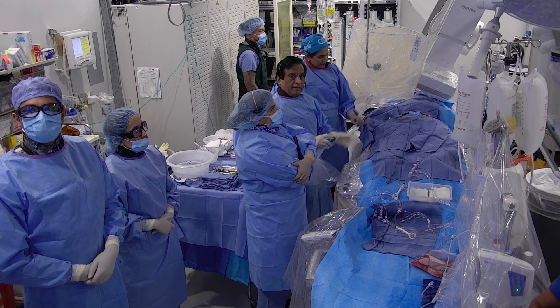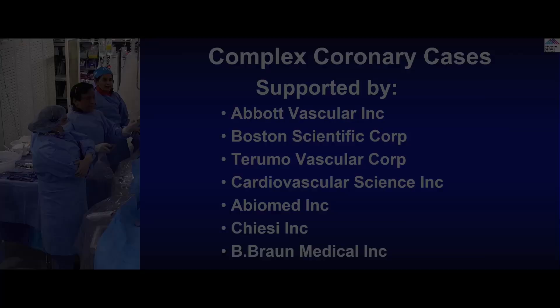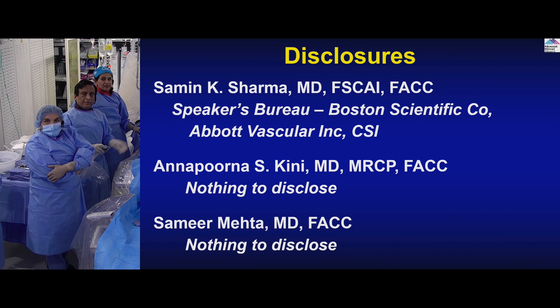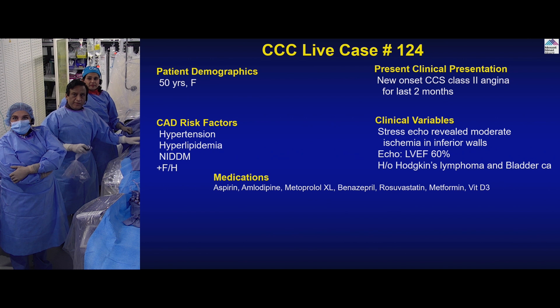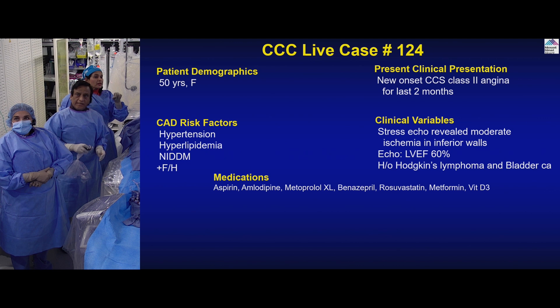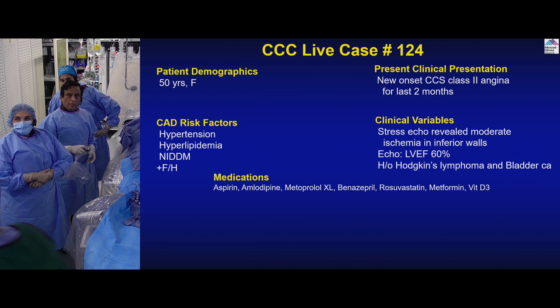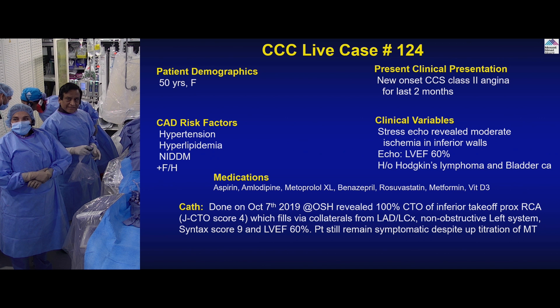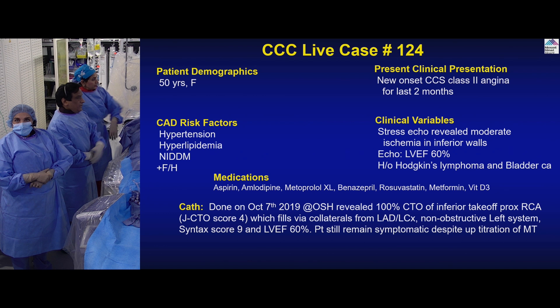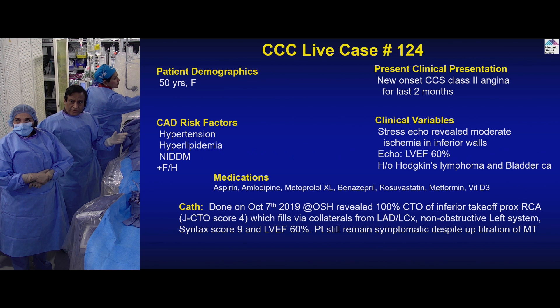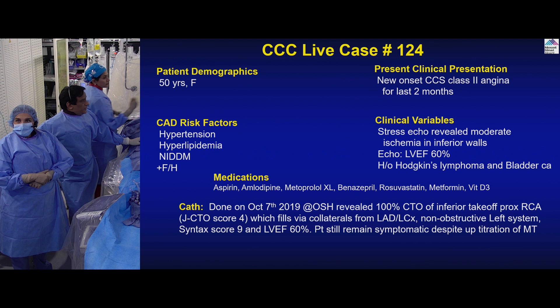This is case number 124: a 50-year-old female with multiple CAD risk factors, new onset angina for two months. Stress echo revealed moderate ischemia in the inferior wall with normal EF. She has prior Hodgkin's and bladder cancer, both treated. A cath done at an outside hospital showed RCA CTO — single vessel disease with good collaterals, low syntax score, and a JCTO score of 4 based on the prior angiogram. That changes a little bit with today's angiogram.